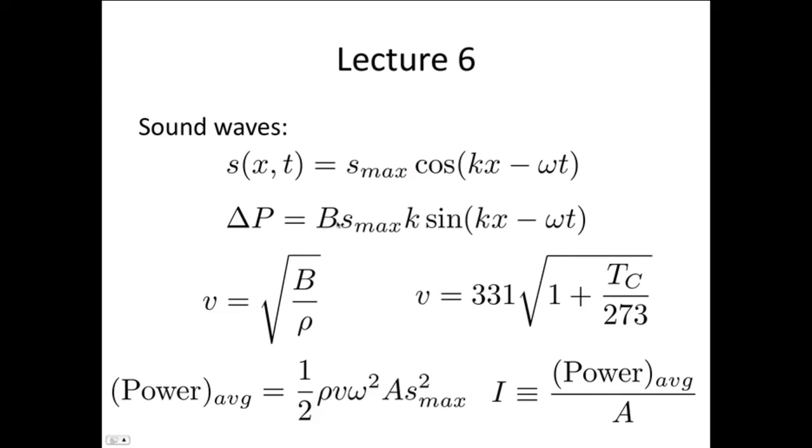The change in pressure equals B, where this is the bulk modulus, s_max k sin(kx - ωt). The important point is that this is a cos and this is a sin. So the pressure difference and the displacement are 90 degrees out of phase with each other.